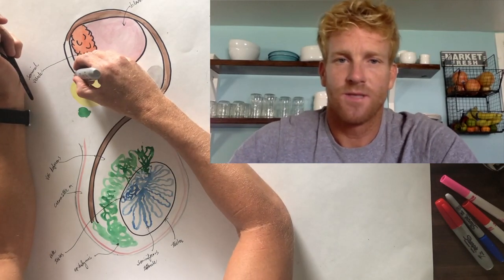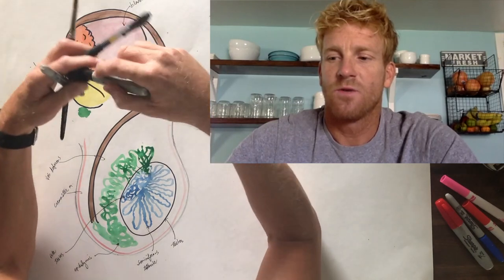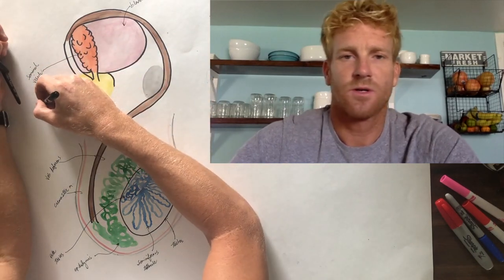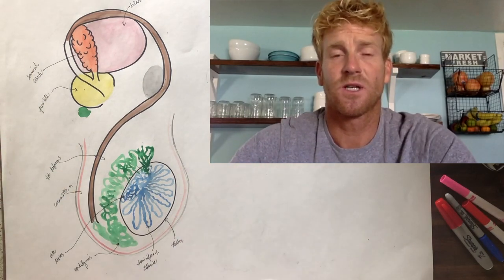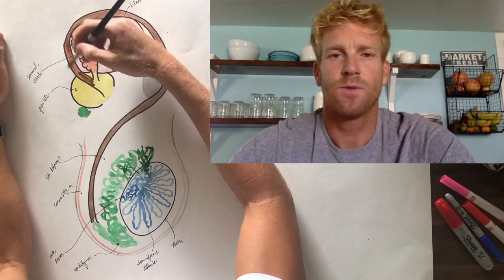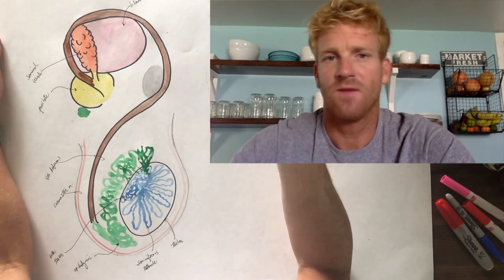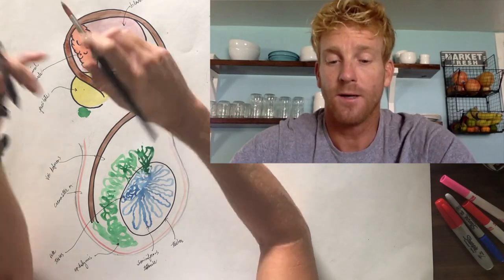So the sperm will meet up with the secretions from the seminal vesicle. Then the vas deferens goes right through this yellow structure, which is called the prostate. The prostate is another accessory gland which is going to secrete more fluid. It's a whitish fluid which contains a bunch of enzymes which help to activate the sperm, activate them to swim so fertilization can occur later.